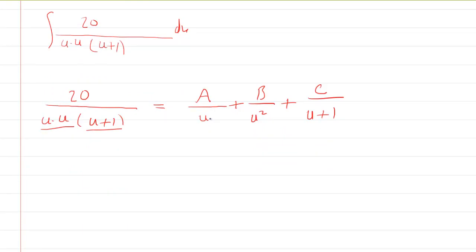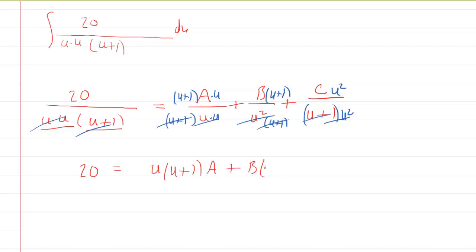And we have to now find a common denominator. So this needs to be multiplied by both a u and a u plus 1. This needs just a u plus 1. And then this denominator over here is missing the u squared. Once you have a common denominator, the easiest thing to do is to just cross it all off. Basically, you're multiplying each term by the common denominator. So now you're left with 20 equals u times u plus 1 times A plus B times u plus 1 plus C times u squared. And our goal is to find A, B, and C.